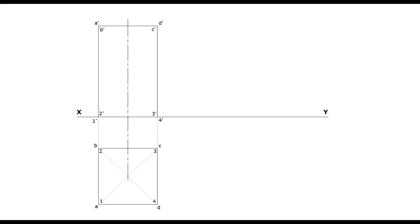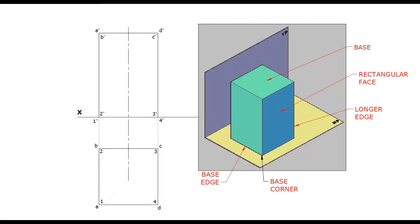These are the first stage plan and elevation by assuming that the prism is resting with its entire base on HP with its axis perpendicular to HP. It should be noted that whenever the axis of the solid is perpendicular to HP, definitely the base will be on HP or at least parallel to HP.